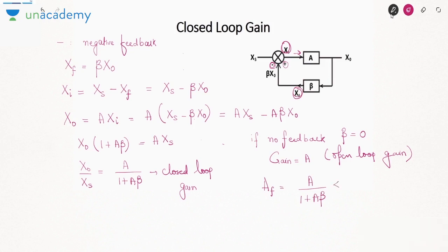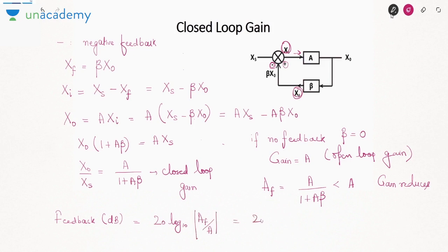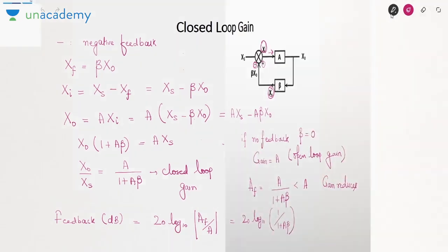The closed-loop gain A/(1+Aβ) is less than A. That means by the use of negative feedback, the gain reduces. The effect of feedback in decibel is: 20·log₁₀(1/(1+Aβ)). Always remember: by the use of negative feedback, the gain reduces.